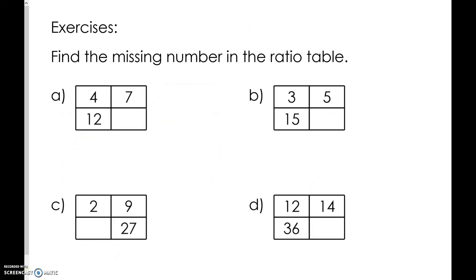You can also represent ratios in a ratio table. In this case, 4 and 7 are a ratio. If our first number is 12, what will the second number be? Look at what happened to the first number. 4 times 3 is 12. 7 times 3 is 21. An equivalent ratio of 4 to 7 is 12 to 21.